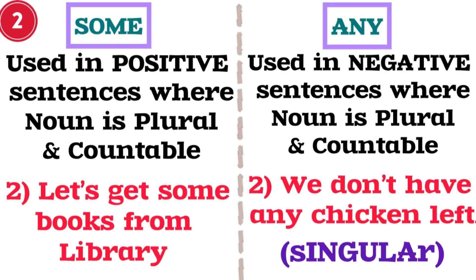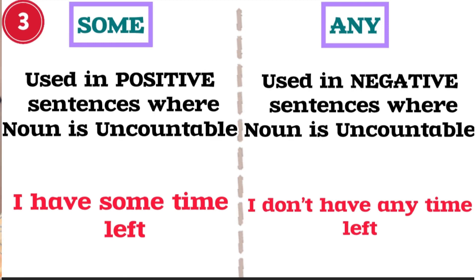In such cases we use 'any.' Rule 3: if the sentence is positive and has an uncountable noun, we use 'some.' For example, 'I have some time left with me' — time is uncountable and the statement is positive, so make sure you use 'some.' Rule 3 for 'any': if the sentence is negative and the noun is uncountable, we use 'any' — for example, 'I don't have any time left.' Generally, sentences with 'some' are positive and with 'any' are negative.